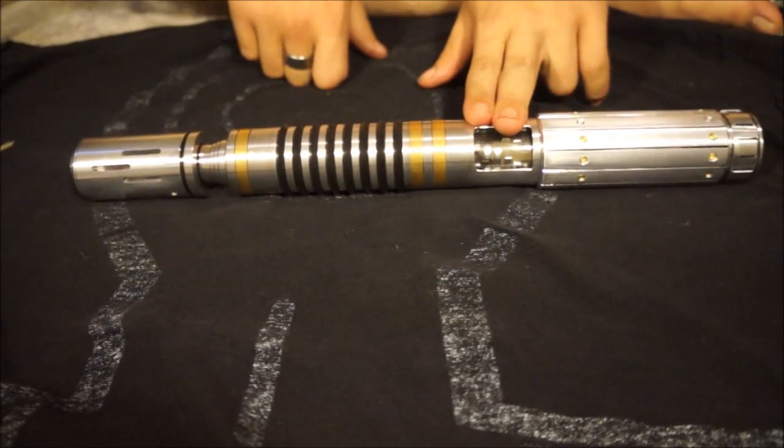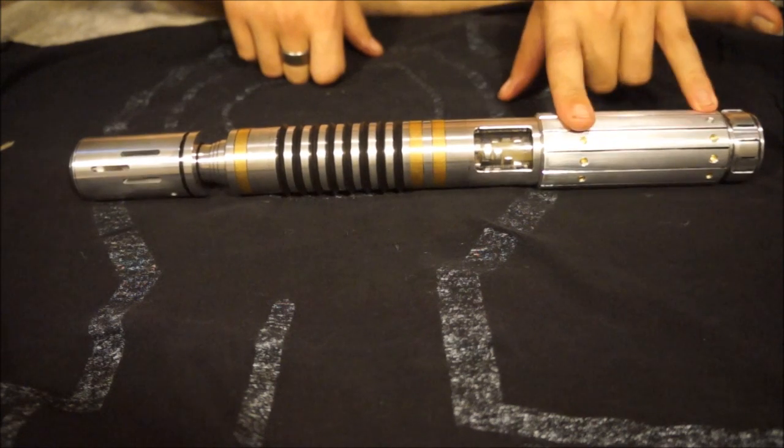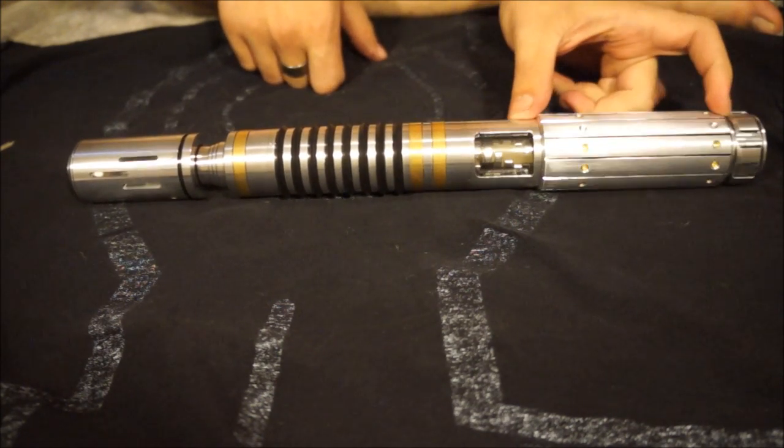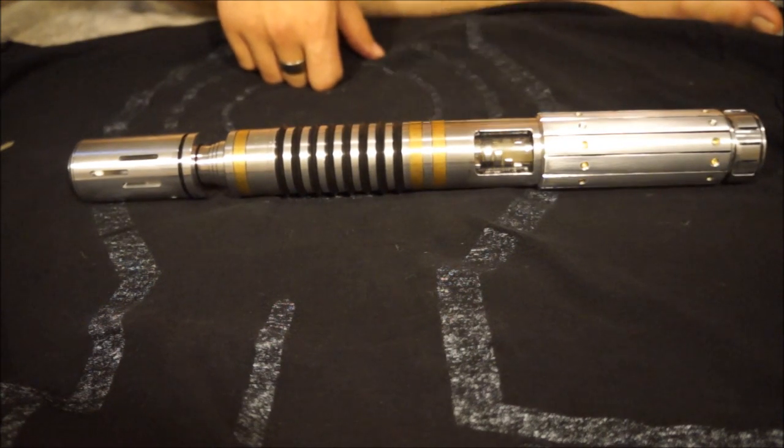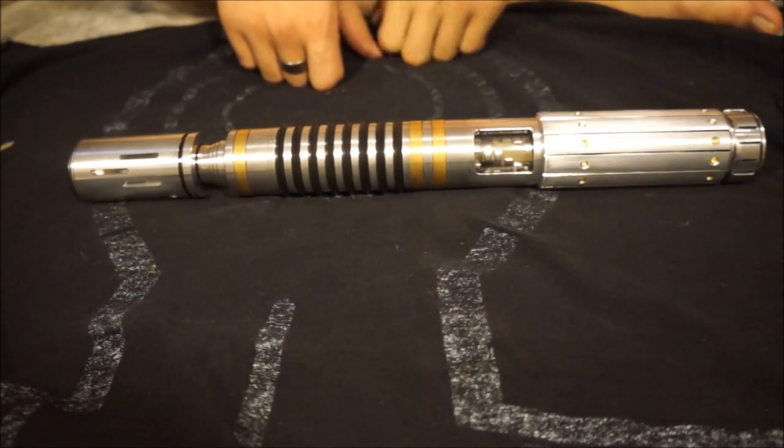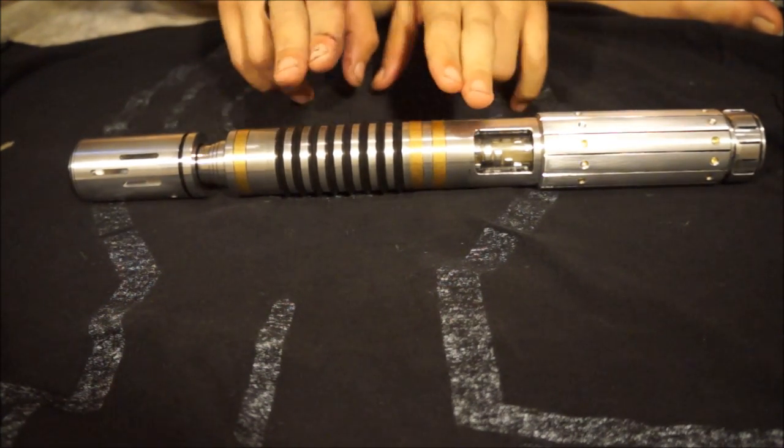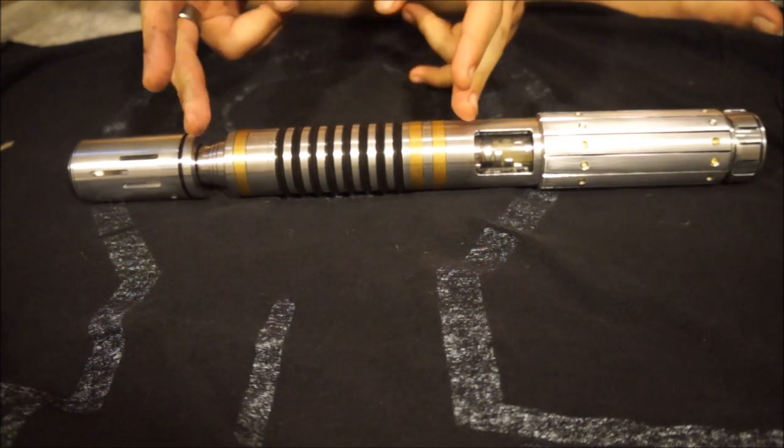If you want to fit an 18650 battery in the back here along with all of your electronics, you're going to need a 4 inch tube and that will give you more than enough room to fit your battery in there and whatever electronics you're doing.